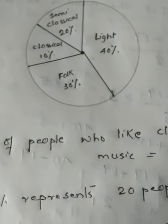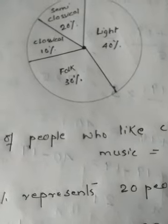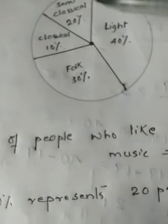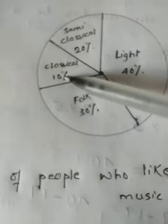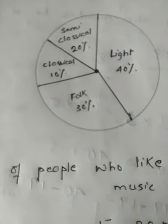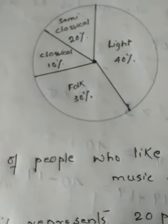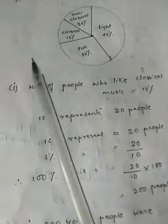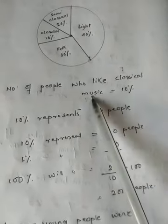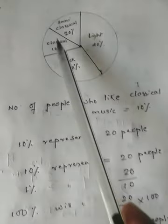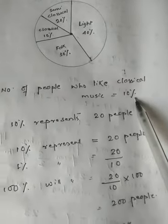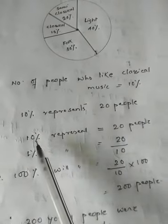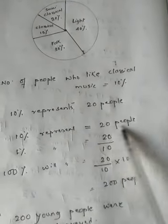The first question is: if 20 people liked classical music, how many people were surveyed? So we have to find the total number of people. The number of people who like classical music according to the pie chart is 10 percent. So 10 percent represents 20 people.